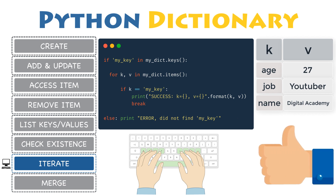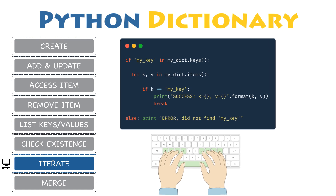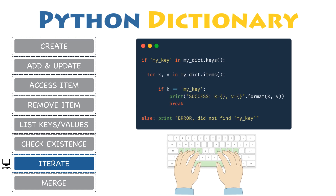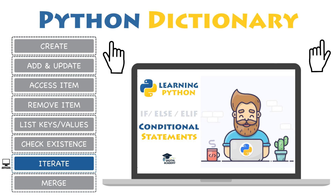Congrats! You have just written your first dictionary, iterated through it using a for loop, and found a specific key's value. Note that all of this code was not strictly necessary — since if my_key was part of the dictionary's keys, you could have accessed its value directly without iterating. But that was a little exercise so you can practice using for loops, if statements, and dictionaries all combined together. Do not forget to watch the videos about for loops and conditional if statements if you need help understanding those core Python concepts.